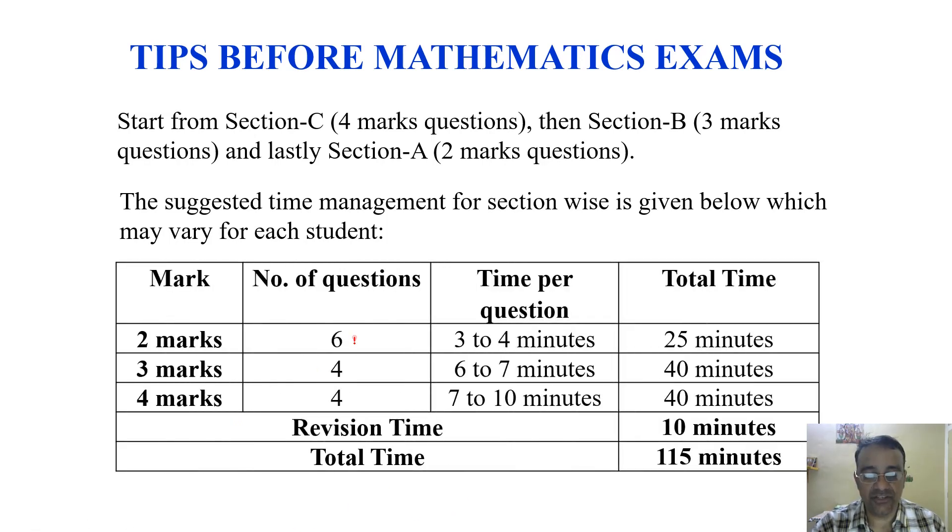So 2 marks questions section A, 6 questions are there. I will suggest for each question 3 to 4 minutes, maximum 25 minutes. And for 3 marks questions, 4 questions are there, 6 to 7 minutes time and maximum 40 minutes. And 10 minutes revision time. So all together 115 minutes time.